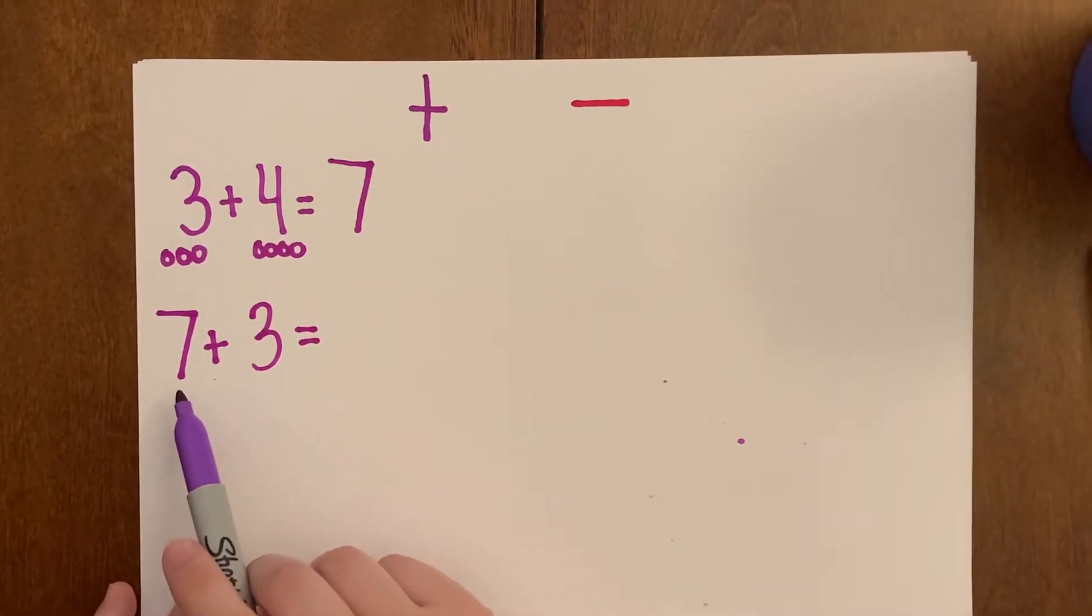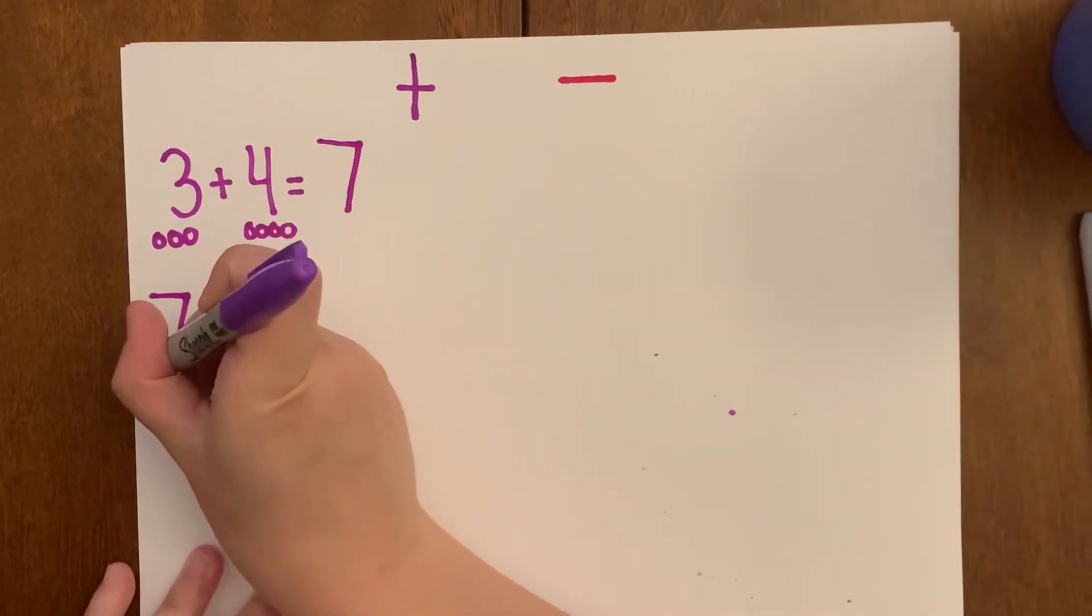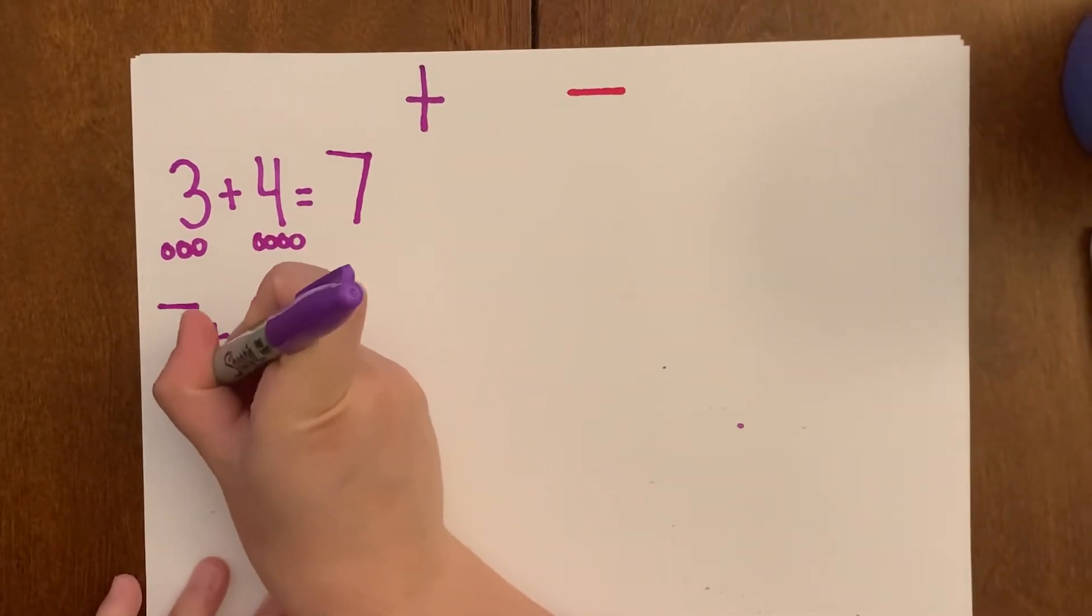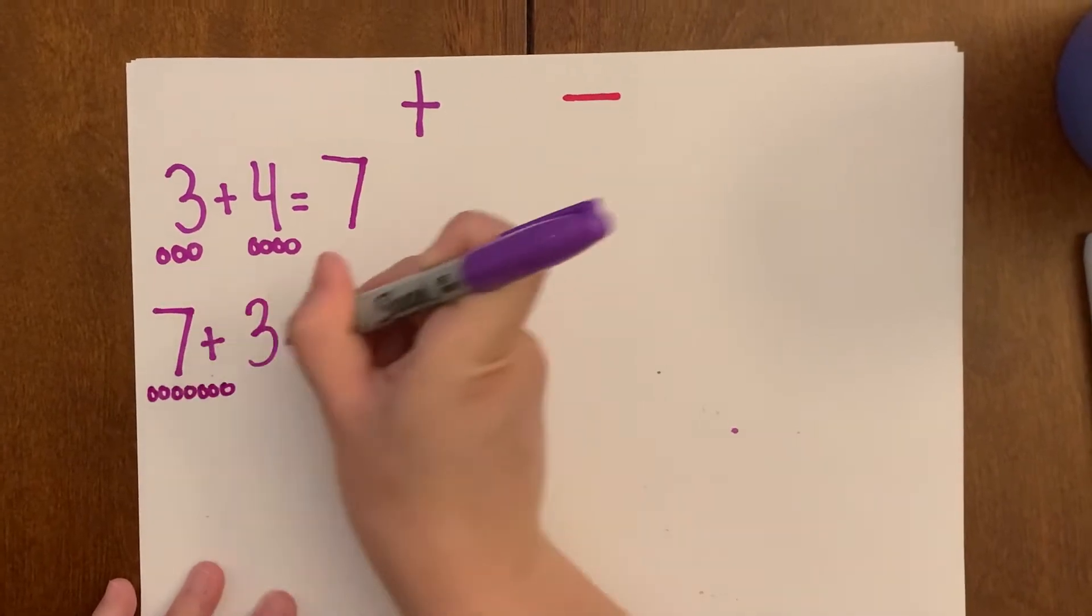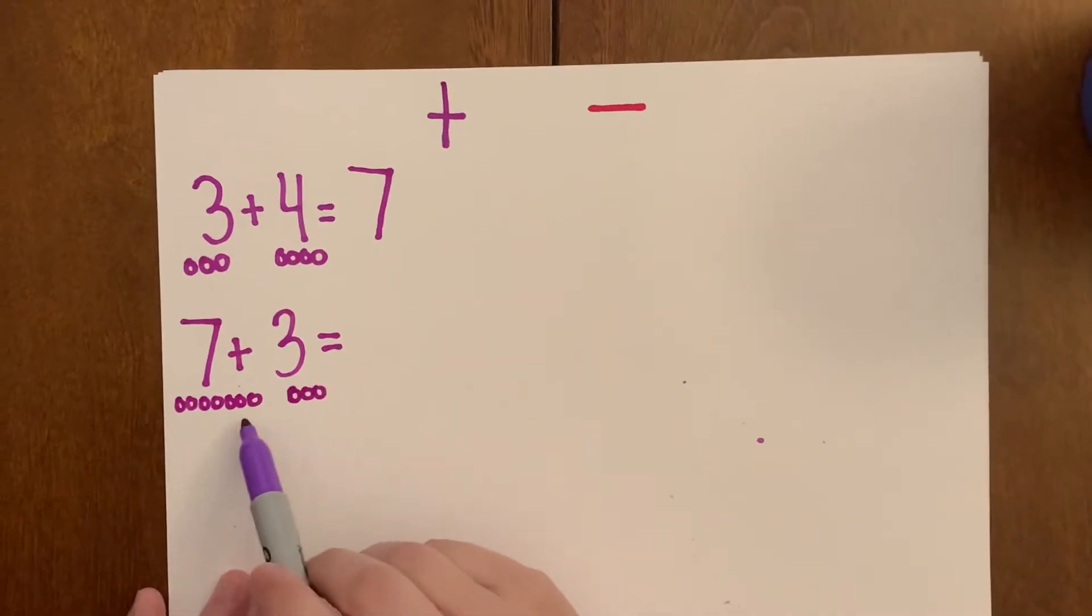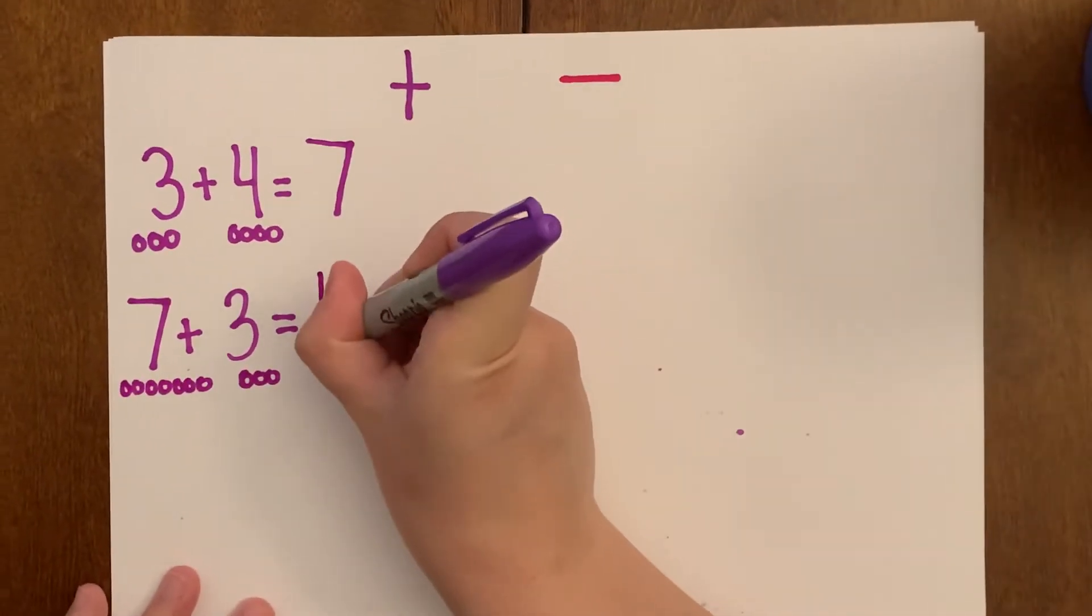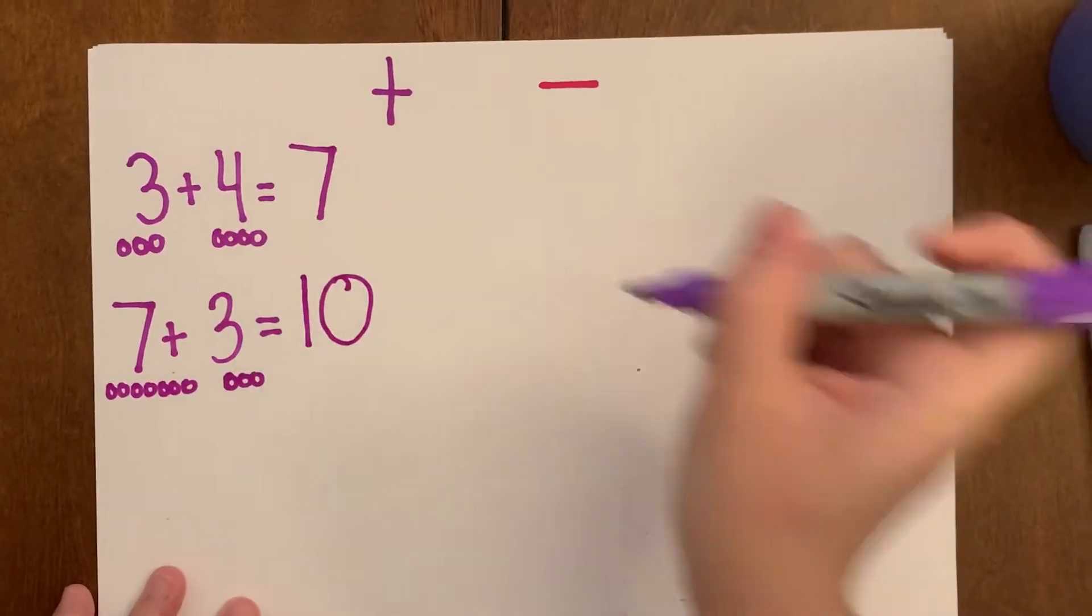We're adding two numbers together to make a bigger number. So we have seven. One, two, three, four, five, six, seven. Then we have three over here. One, two, three. Let's add them together. Seven, eight, nine, ten. Seven plus three is ten. Very good.